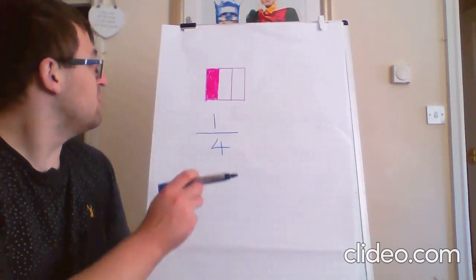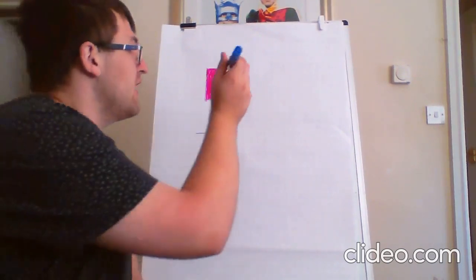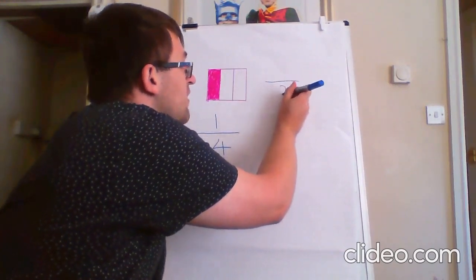Now, as you can see, my one on the board is split into one, two, three parts. Okay? So, my denominator is going to be three.